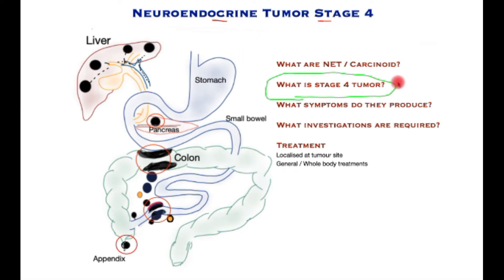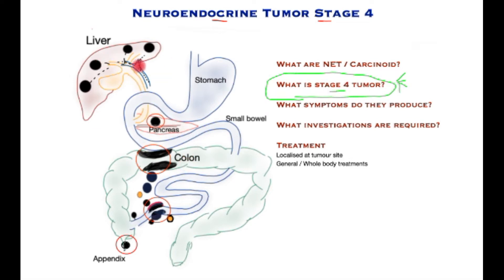Tumors are classified according to stages. Early disease that has not spread and is small in size is stage 1, progressing through four stages. Stage 4 means spread beyond where the tumor arises. If it originates locally it will be stage 1 or 2, however when it starts spreading to distant sites such as the liver that is stage 4. The liver is one of the commonest sites of spread; others could be lung, brain, and bone.